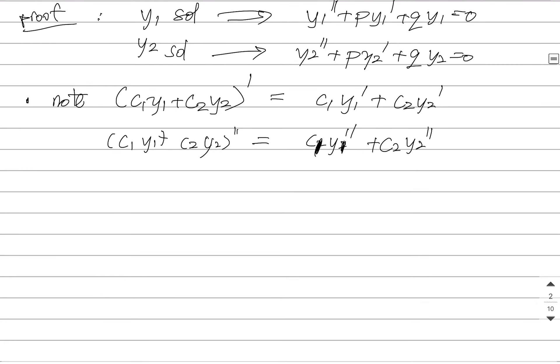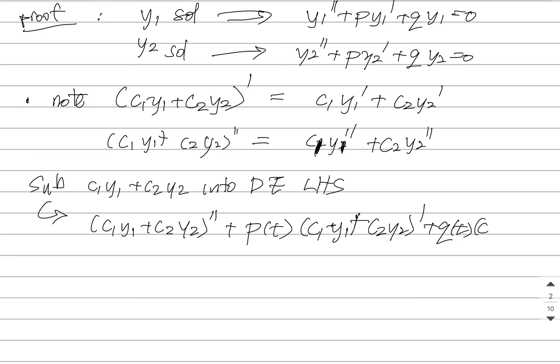And linearity is a really useful property. What we're going to do is we are going to sub C1 Y1 plus C2 Y2 into the differential equation left-hand side because I want to see what it gives me. All right. So if I put this in to the DE on the left-hand side, I take the second derivative. I multiply this by P(t). And then I multiply the function itself by Q(t).